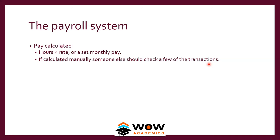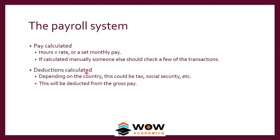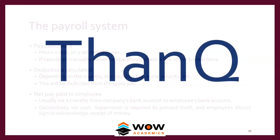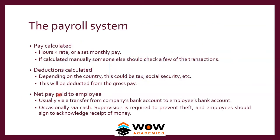If calculated manually, someone else should check a sample of the transactions, because the HR person might deliberately create a higher salary for someone or make mistakes. With 1,000 employees, at least 50 salaries should be randomly checked to minimize fraud and error. Deductions — tax, social security, PF, and ESI — are taken out from the gross pay, and what remains is the net pay. The net pay is usually transferred to the employee by the accounts department, mostly via bank transfer rather than cash.